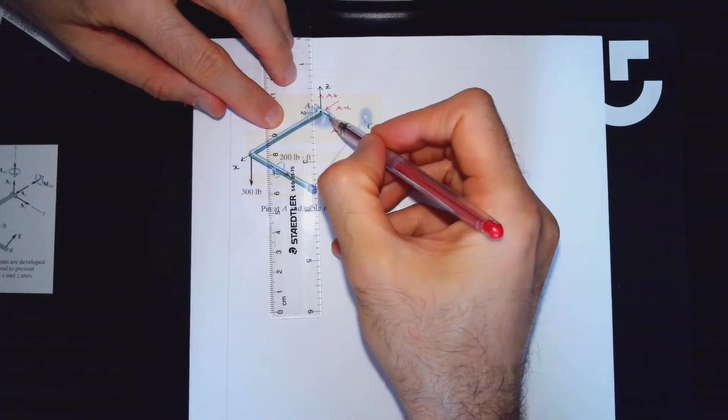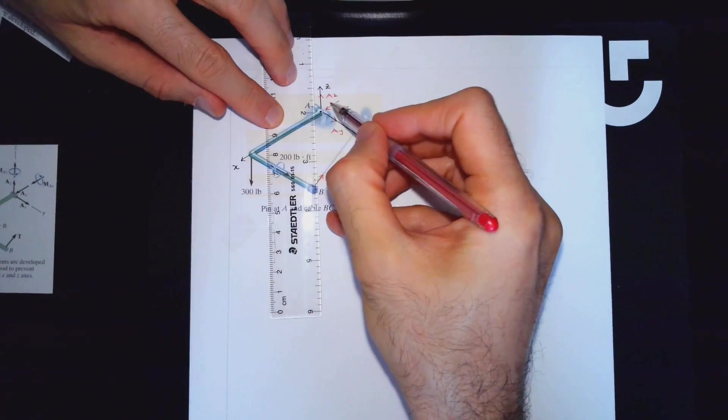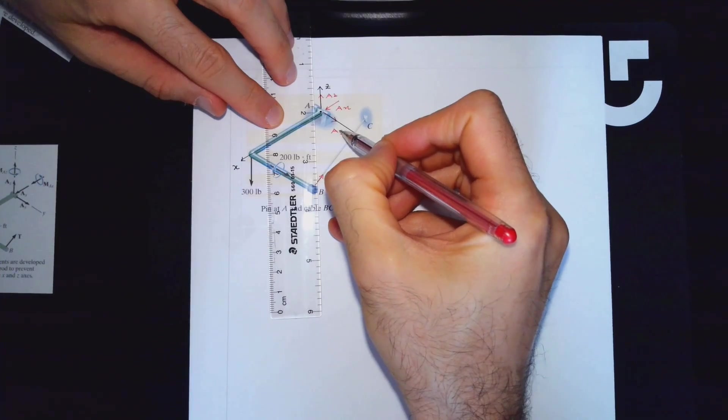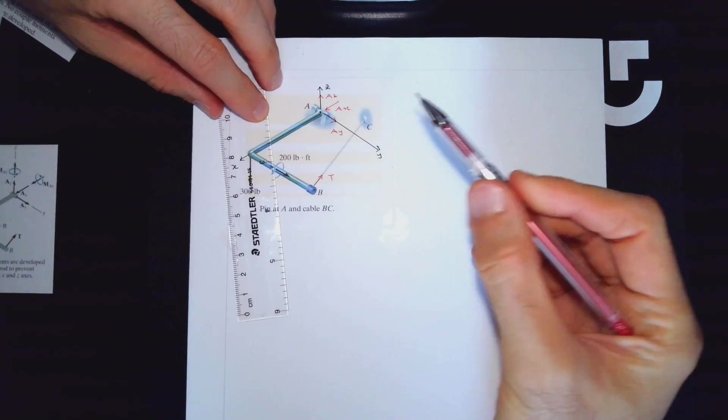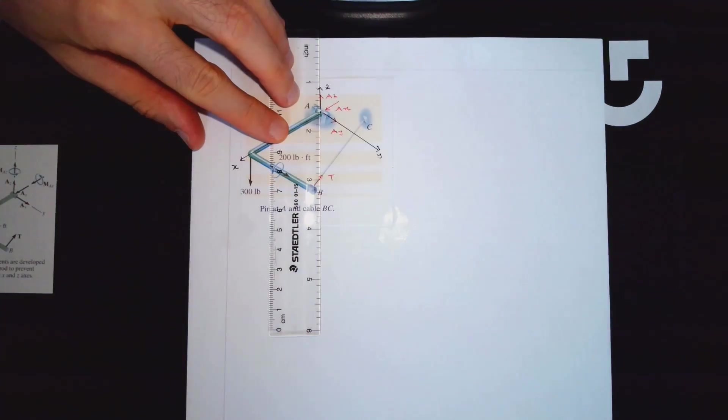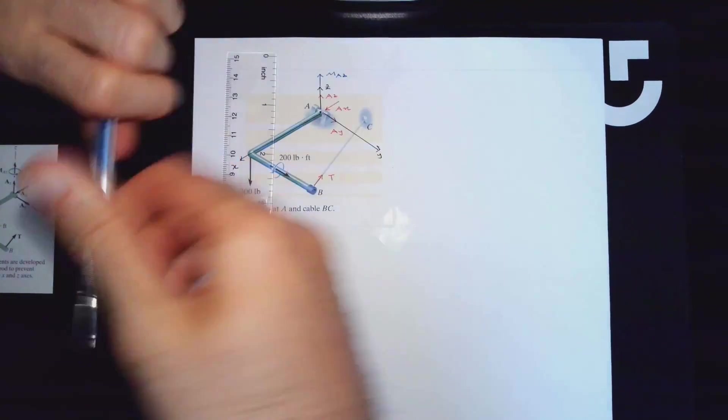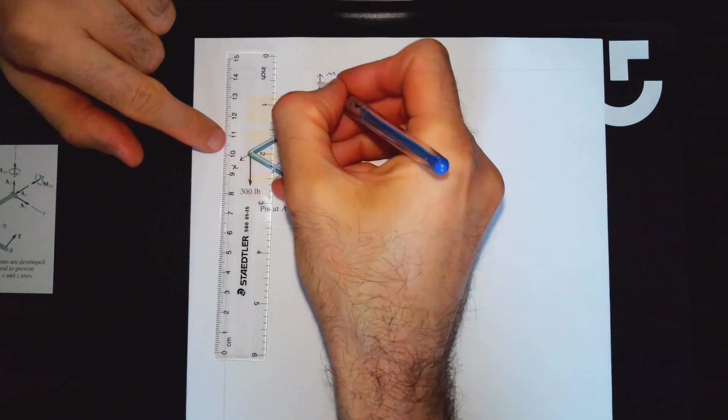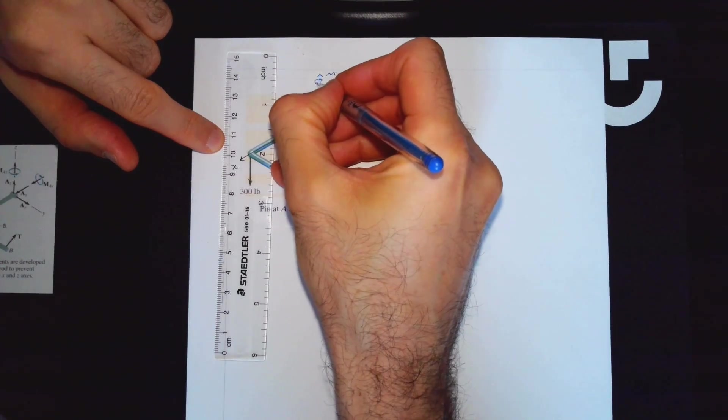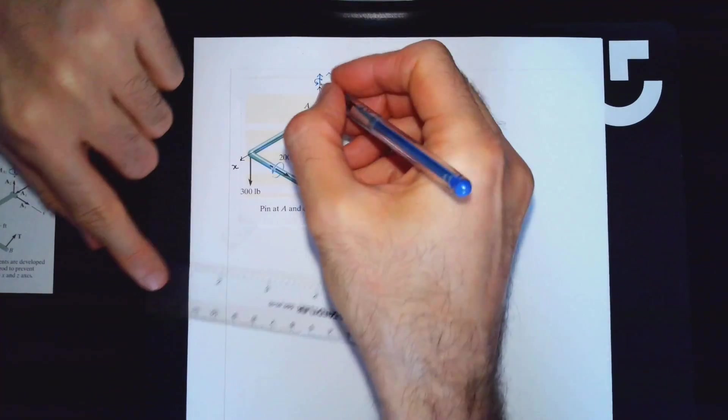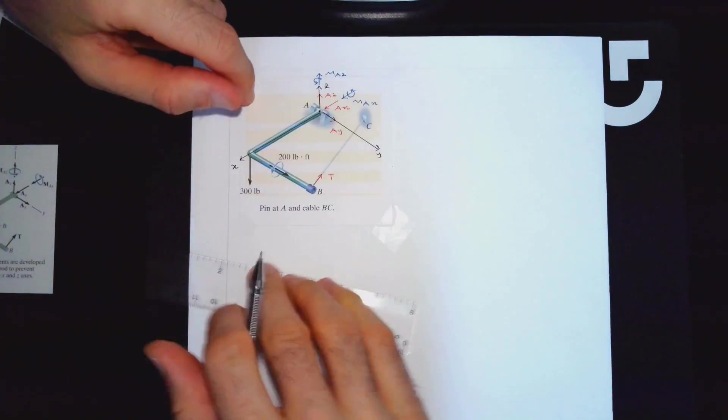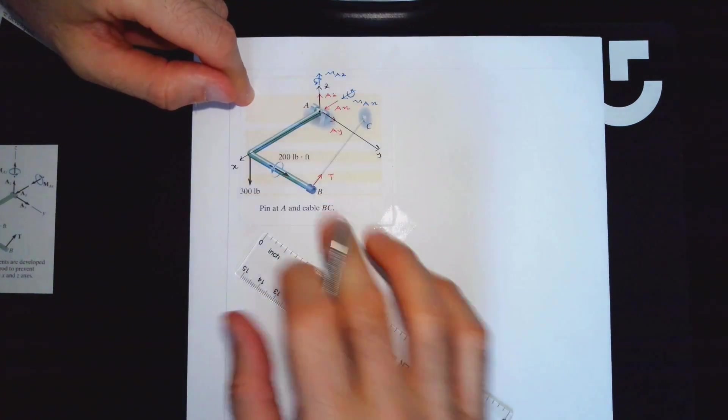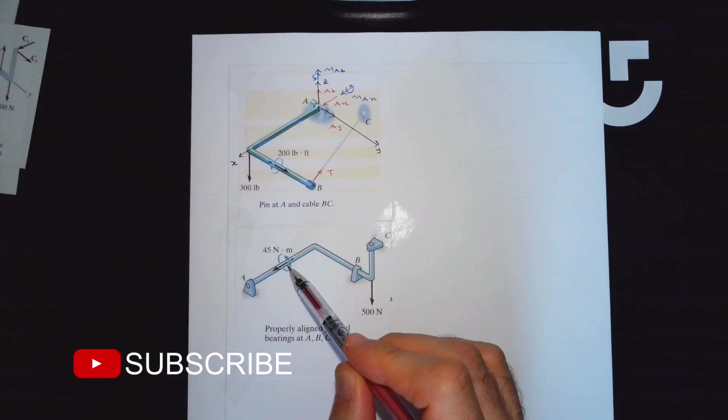In terms of moments, the only moment which is not going to be present would be moment around Y axis because this can rotate. But you are going to have moments around other axes. M_AZ based on right hand rule, this is going to rotate in this way. This is an assumption again. M_AX, and based on this rule it's going to rotate in this way. So that is pretty much it.